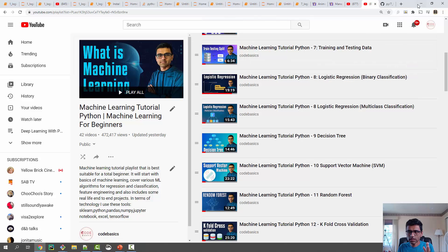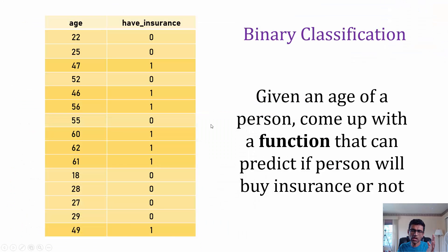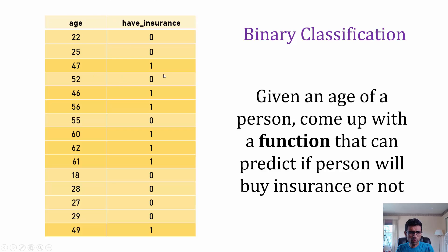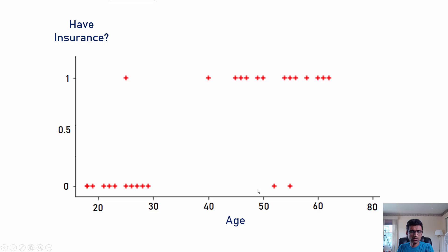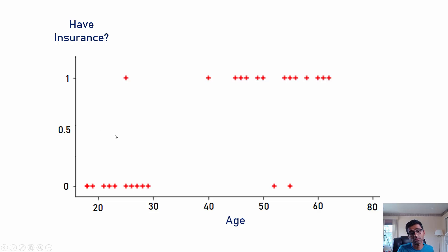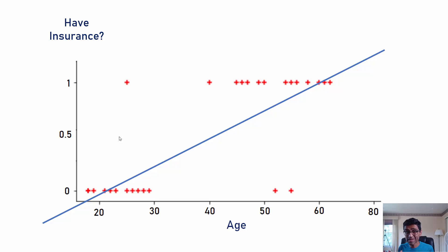Logistic regression is basically an algorithm used for classification problems. I'm going to plot this dataset on a scatter chart — on the x-axis you have age, on the y-axis you have zero and one, where zero means a person doesn't have insurance and one means they do. Using linear regression, you can draw a best-fit line through these data points.